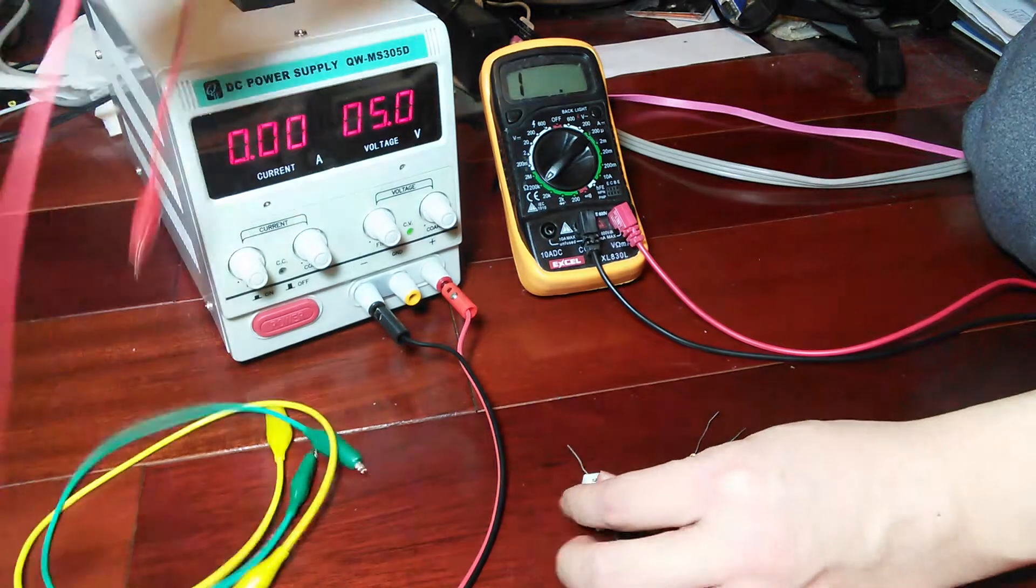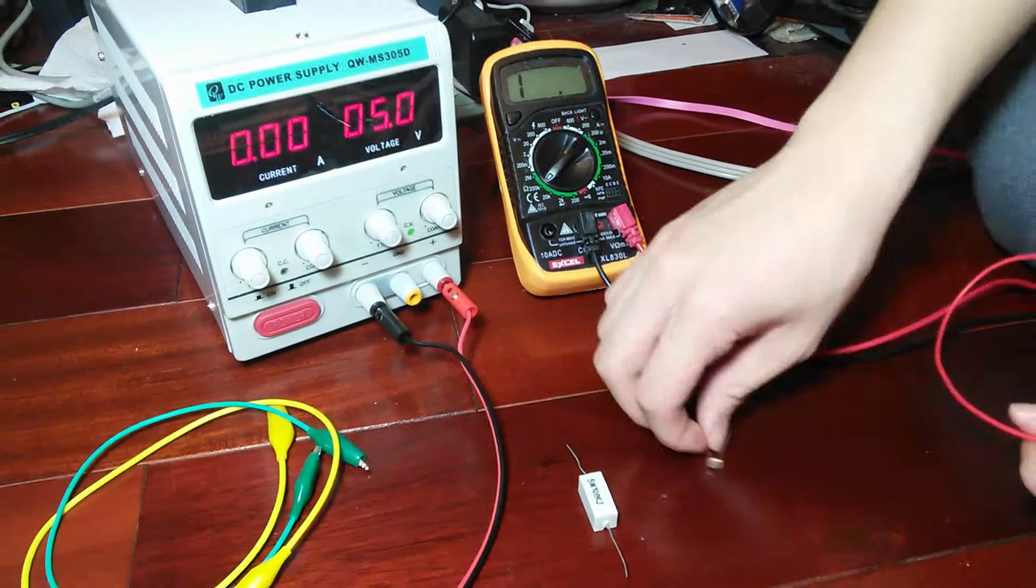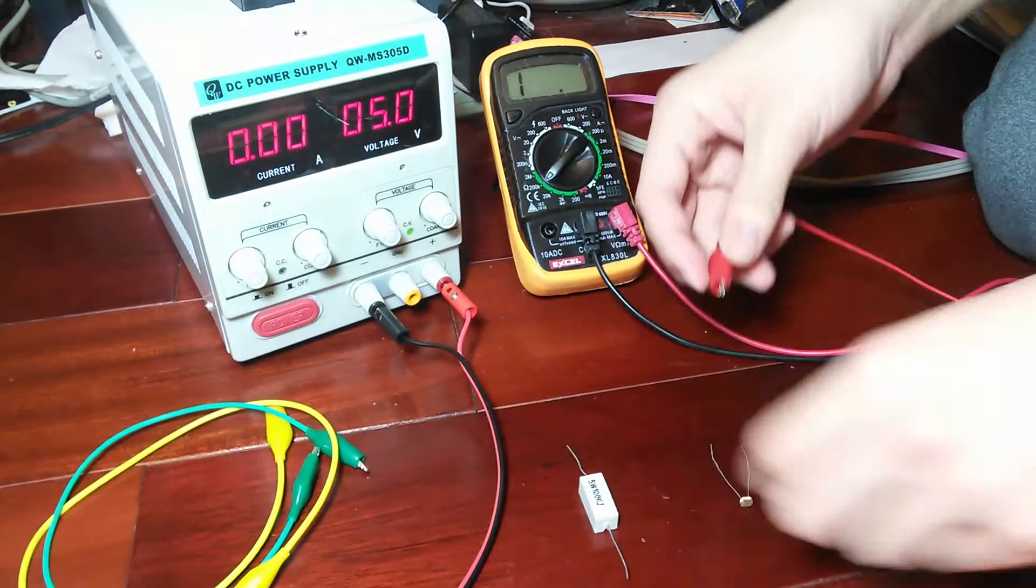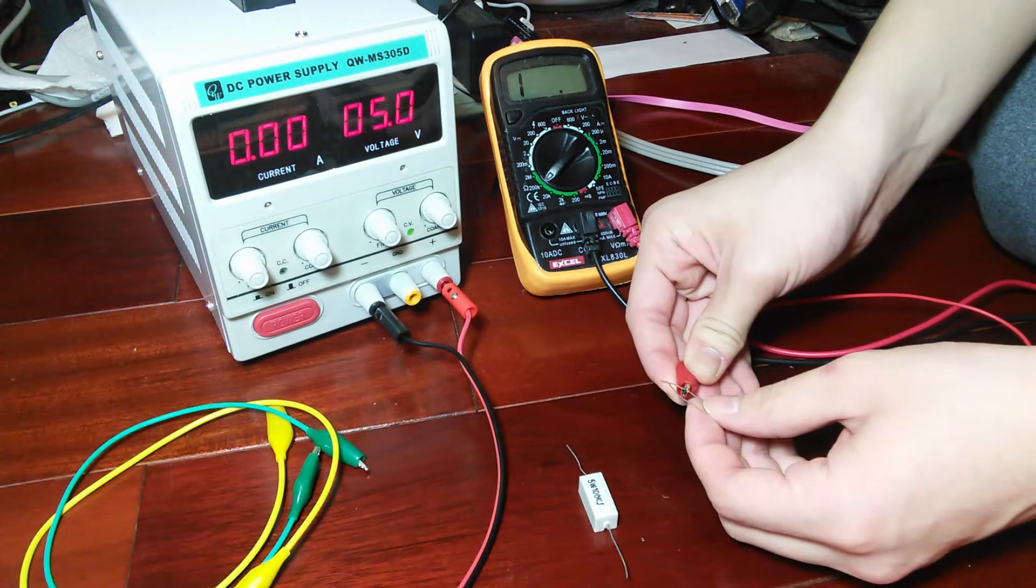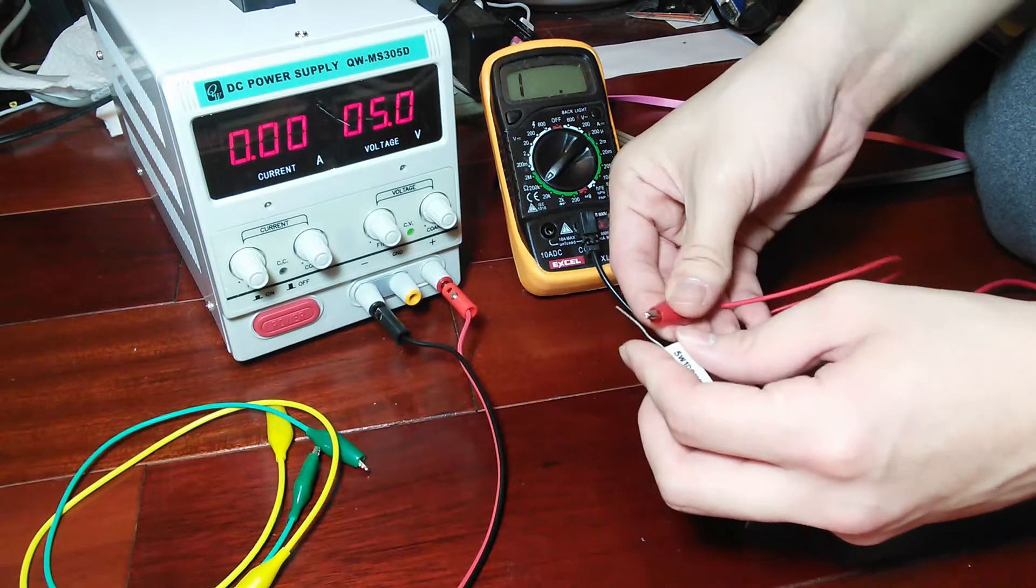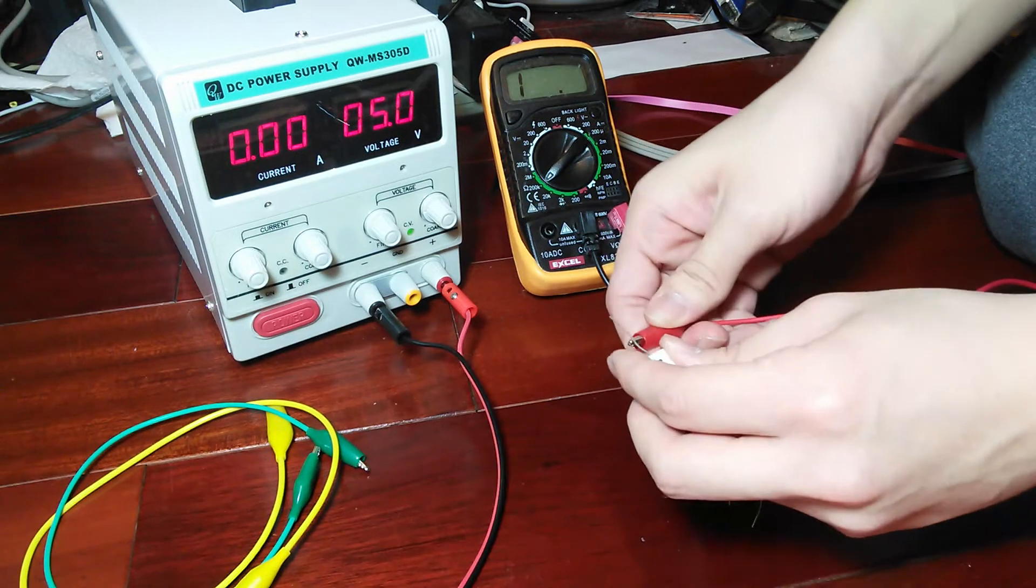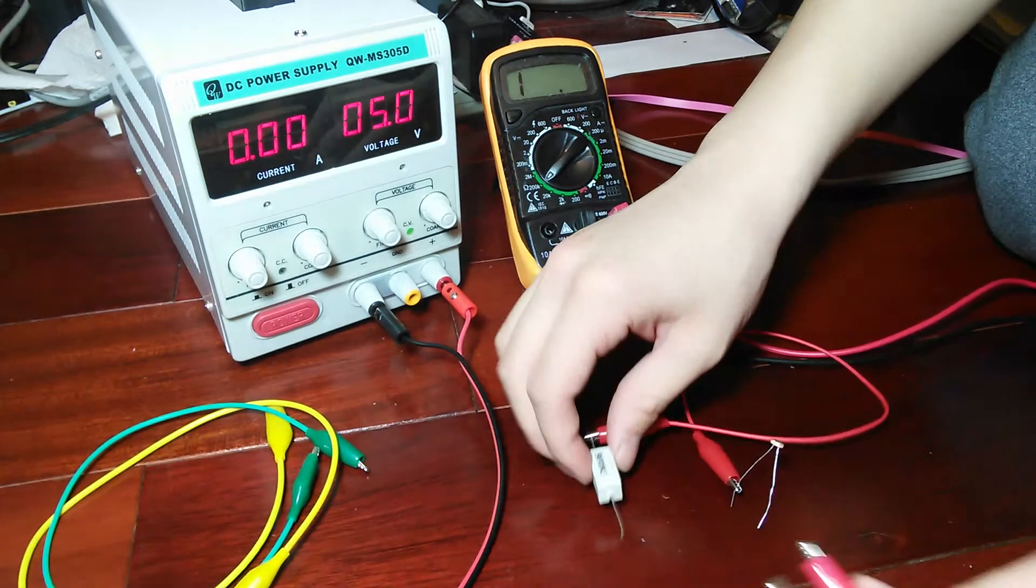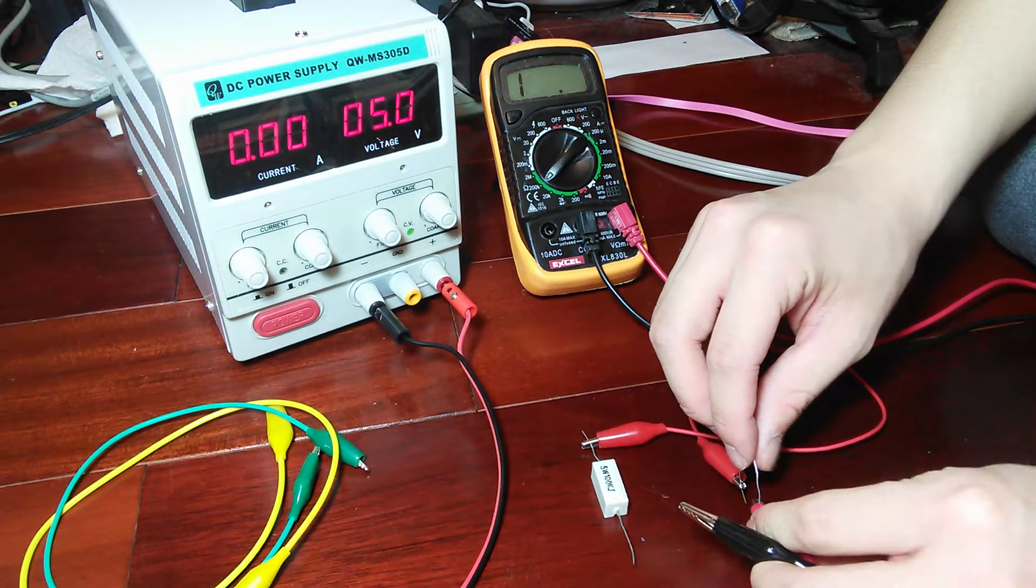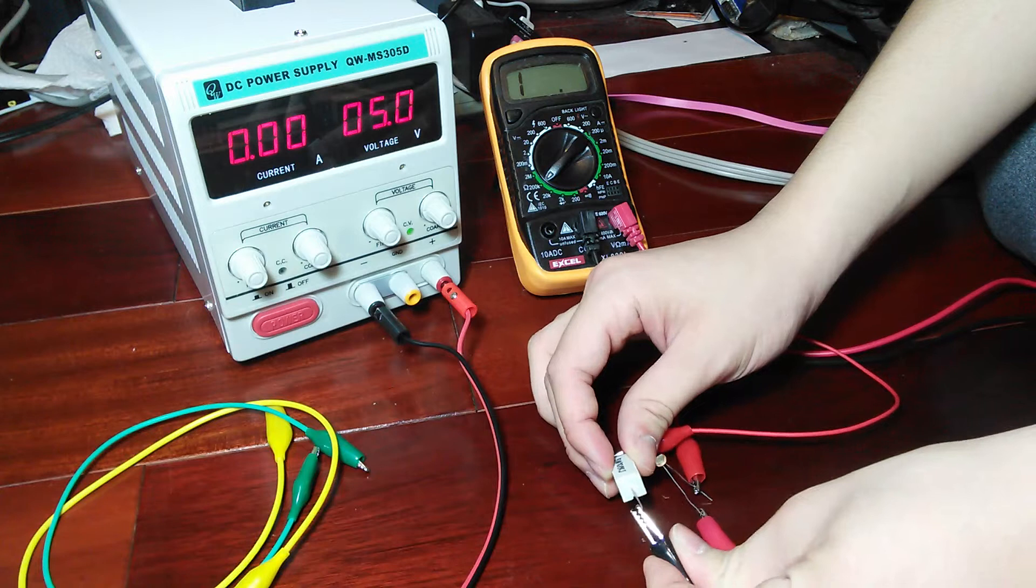Now, what we're going to do is put these in series. I'm just going to use this red wire with alligator clips and hook the leg of one to the leg of the other. And then, we'll take the supply leads and hook one here and the other there.